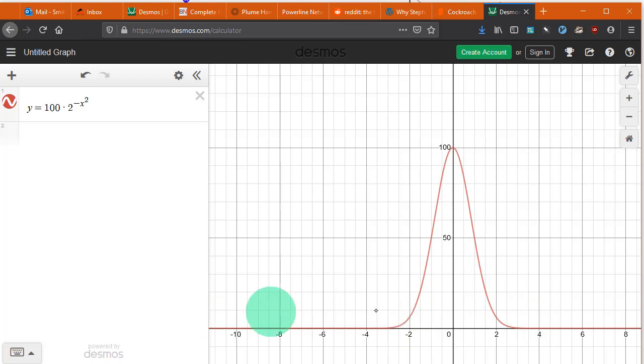The domain however is all real numbers. You're allowed to take any number and square it. That's always fine. Make it negative. That's fine. 2 to any power always works. So all that stuff is allowed.